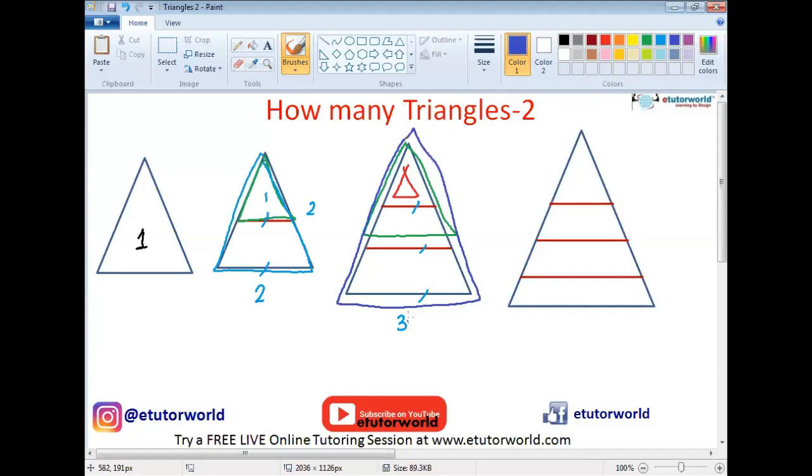So what does the trick say? The total number of triangles is equal to the number of horizontal lines. So quickly, in the next one, I think you can easily tell four lines. Therefore, four triangles will be formed.